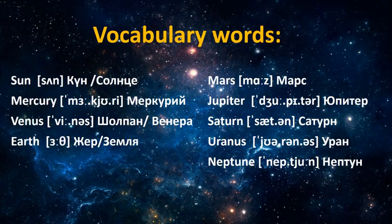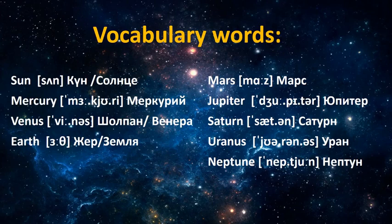Repeat after me the new vocabulary: Sun, Mercury, Venus, Earth, Mars, Jupiter, Saturn, Uranus, Neptune.